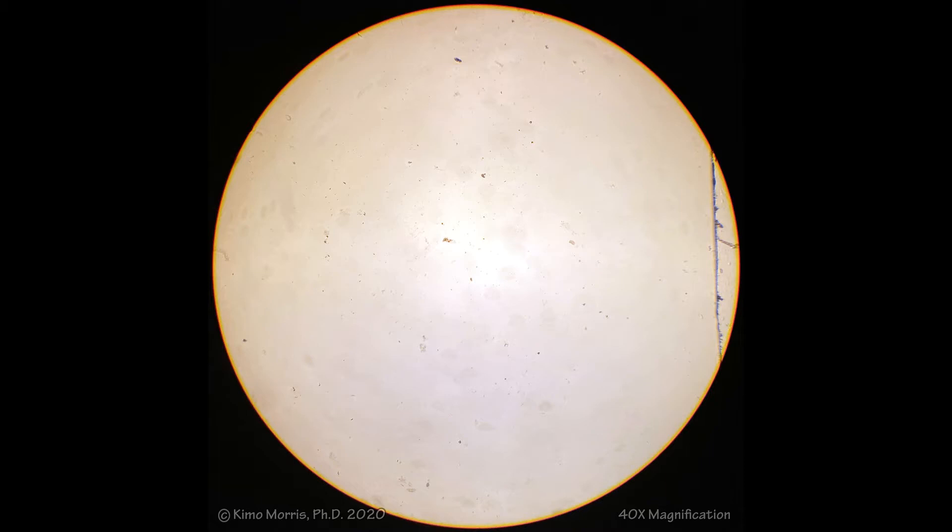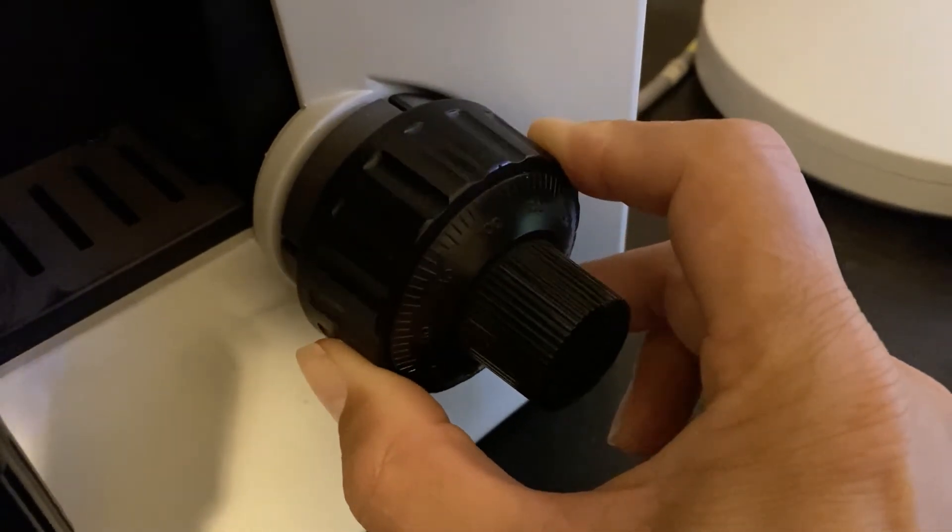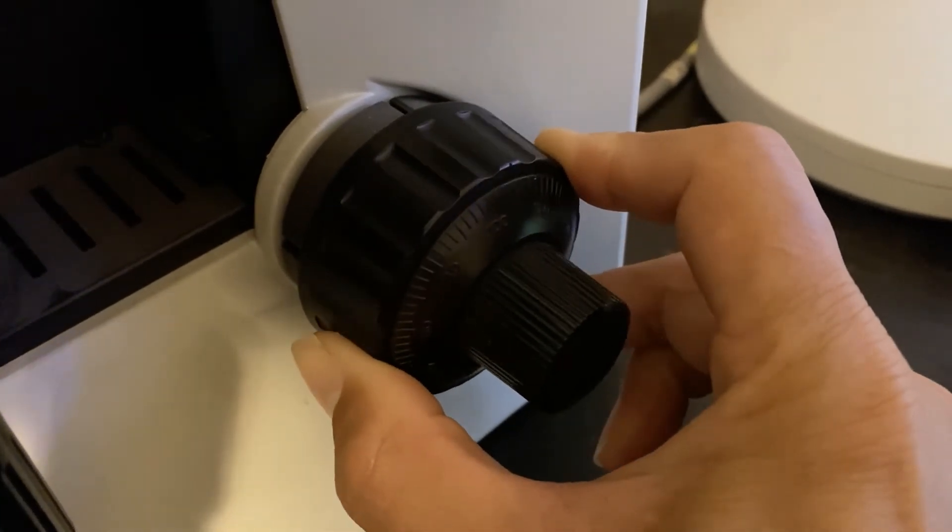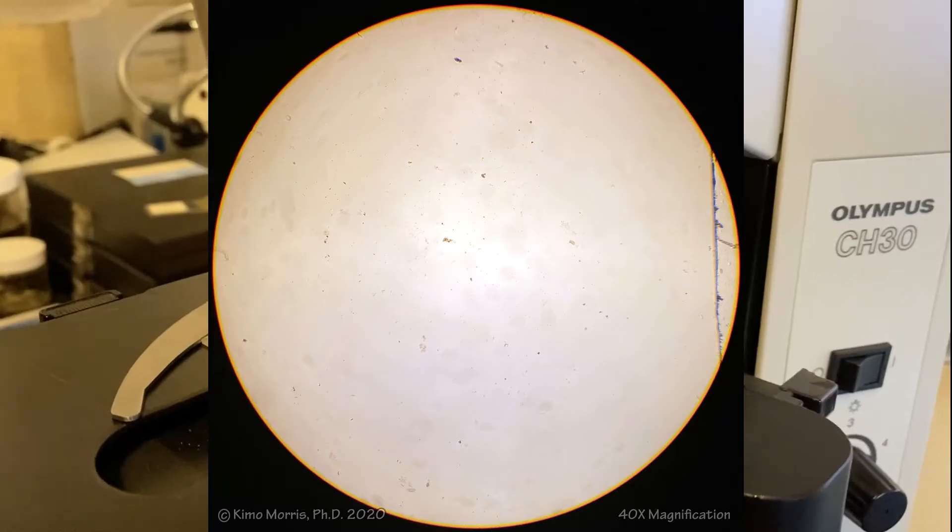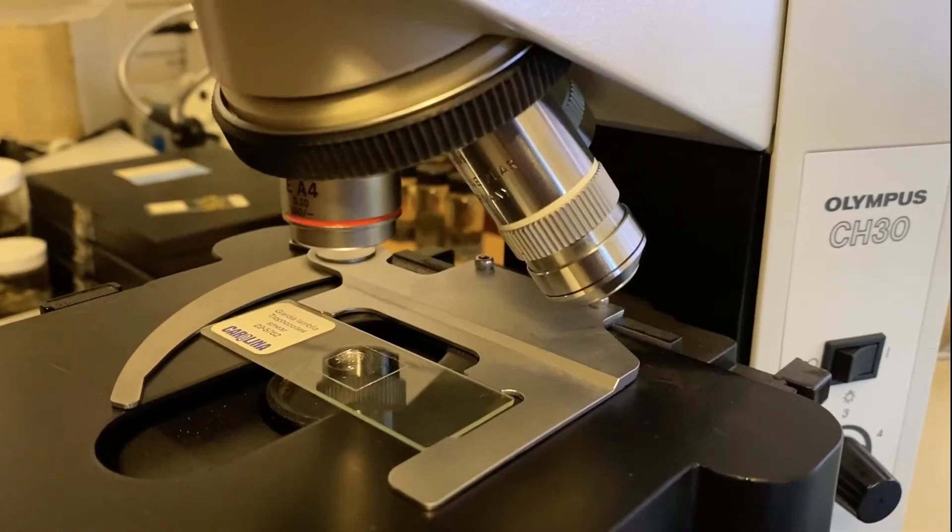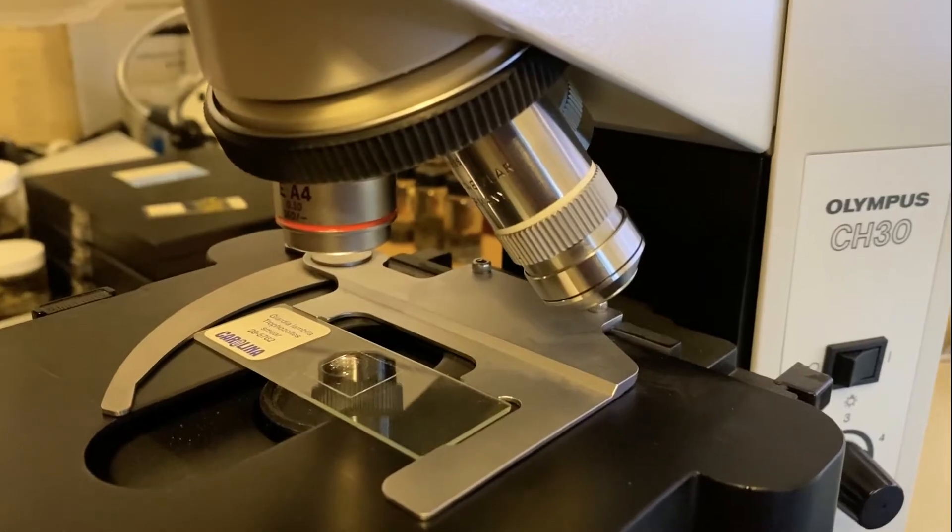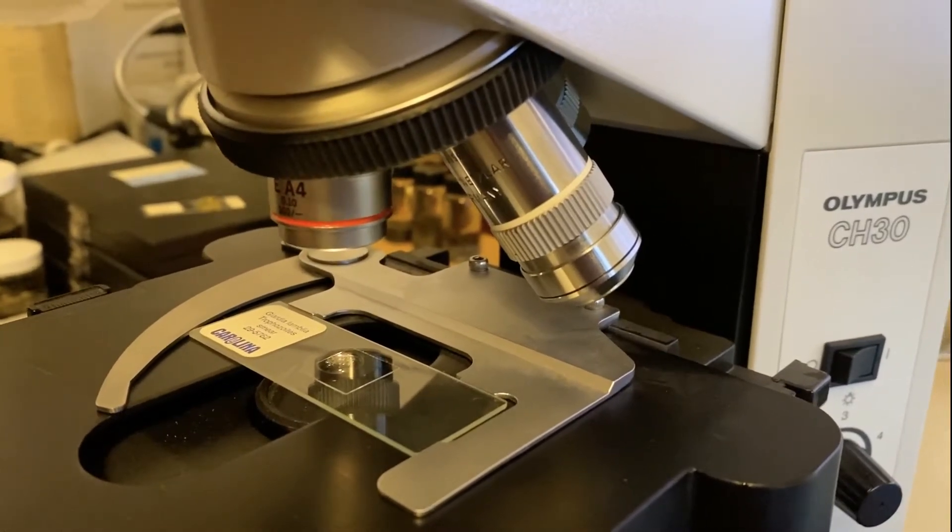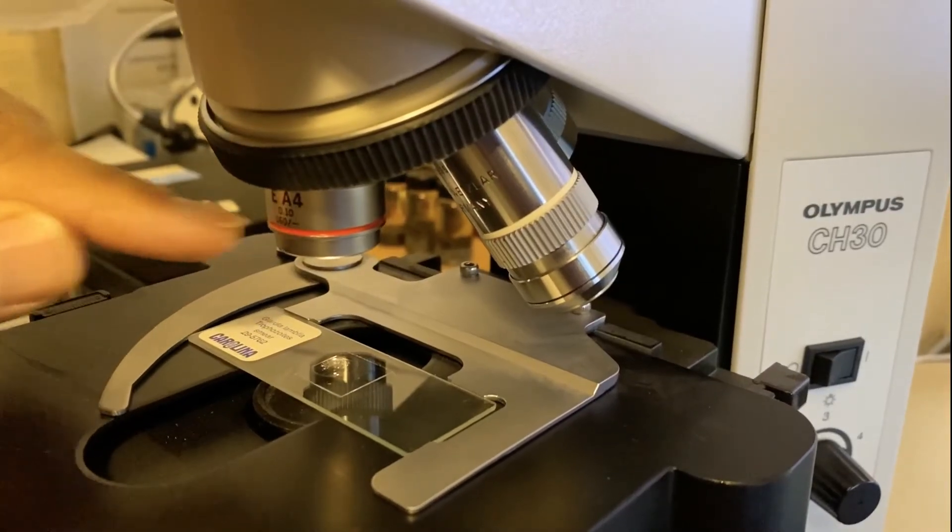However, when you have it set here, you can use your coarse adjustment and make sure that you bring the slide up to the proper plane where you're actually focused on the two-dimensional space that these organisms are found on. Otherwise, if you immediately rush to one of these higher magnifications, the chances that you're actually going to find the proper plane is just really difficult. So I recommend starting out with the scanning power just so that you can focus up to the proper plane.